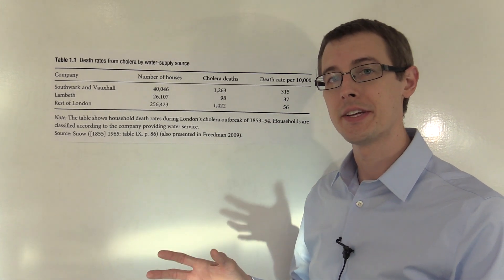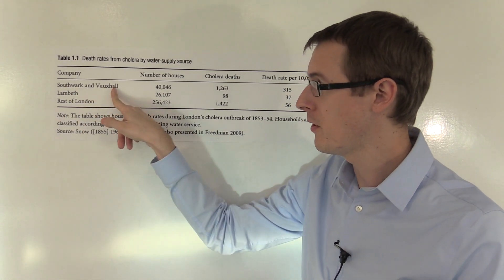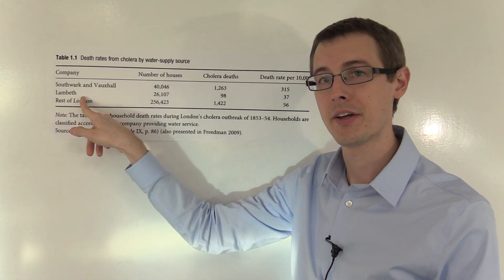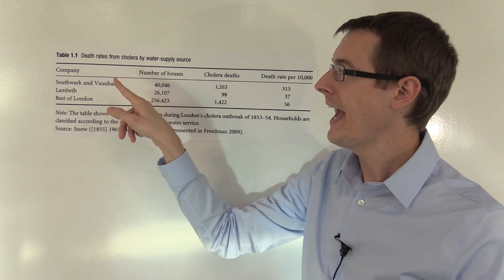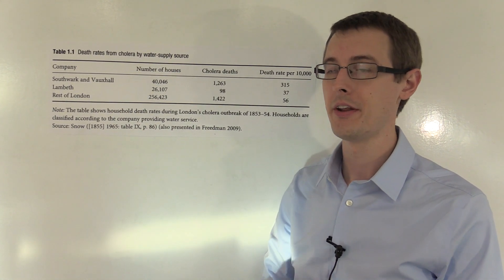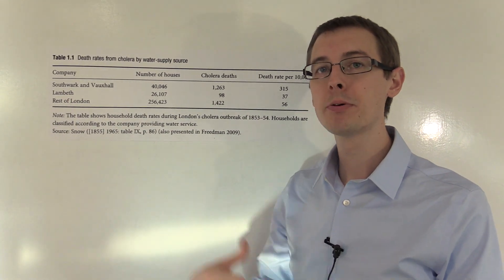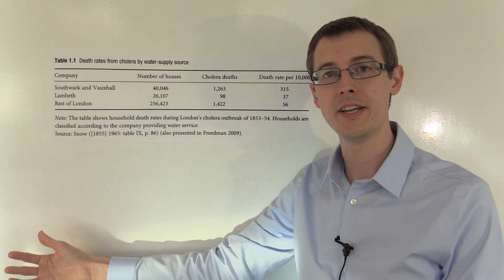In London at the time, many households were provided water by two companies, either the Southwark and Vauxhall Company or the Lambeth Company. In 1852, one year before the epidemic started, the Lambeth Company moved its water intake pipe upstream on the Thames River, before the city.